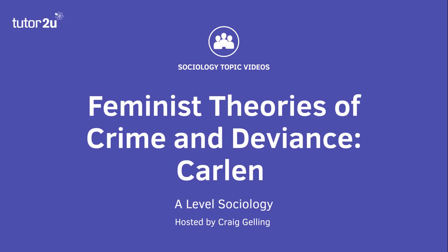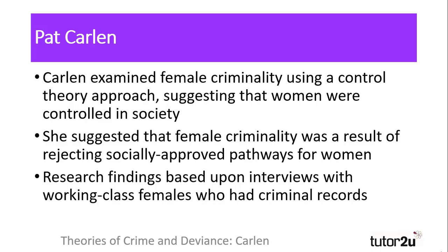Welcome to this Tutor2U sociology topic video on feminist theories of crime and deviance, examining the work of Pat Carlin. Using Travis Hirschi's control theory as the basis of her research, Carlin examined the ways in which women were controlled in several different areas of society. She argued that patriarchal control over women allowed them limited socially approved pathways for having a legitimate lifestyle in society, and that the rejection of these pathways by women, or their inability to achieve via these pathways, led to criminality.